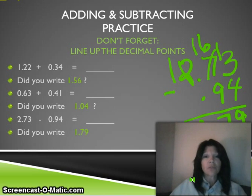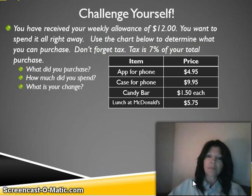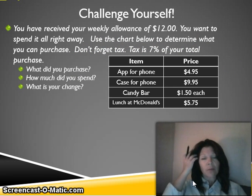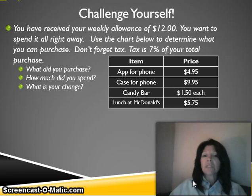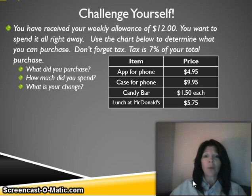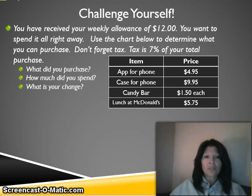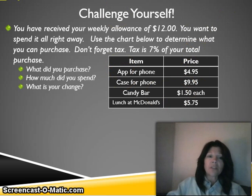Good job. Make sure all of those are written in your journal for tomorrow. Your challenge problem for tonight: you've received your weekly allowance of twelve dollars and want to spend it all right away. Use the chart below to determine what you can purchase. Don't forget tax — your tax is seven percent of your total purchase. What did you decide to buy? How much did you spend? And what is your change?